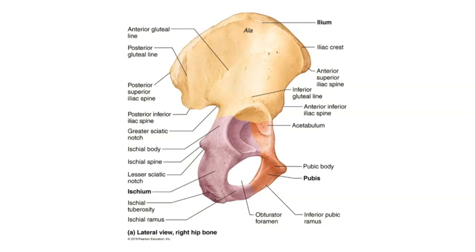Continuing on with the ischium, it contains three important structures. We have the ischial spine, which serves as a point of attachment for a ligament that joins the sacrum to the ischium. Just inferior to that ischial spine is a smaller indentation called the lesser sciatic notch, which provides a pathway for nerves and blood vessels to reach the anal and genital regions of the body.